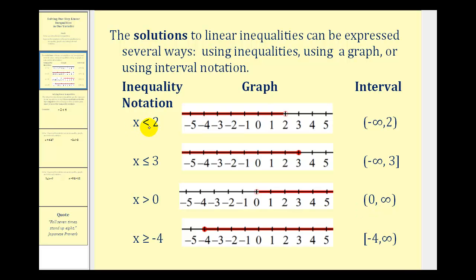Notice for x less than two, we have an open point on two, and then we shade to the left. As we move to the left on the number line, we would approach negative infinity. This is why we have negative infinity and positive two using interval notation. We always use a rounded parenthesis on positive or negative infinity, and we use a rounded parenthesis on two because it's an open point.